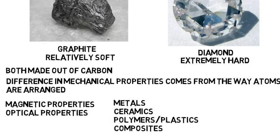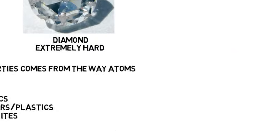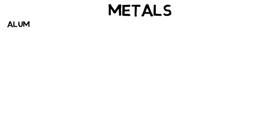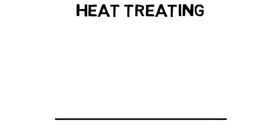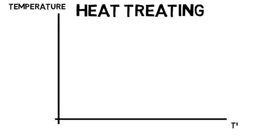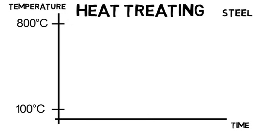You go over the four main classes of materials and apply everything you've learned to all of them, but a big focus is metal. The main metals you go into include aluminum, steel, stainless steel, titanium, copper, and so on. One important topic dealing with metals is heat treating. You're going to learn how to analyze a temperature versus time graph. The temperature may go up to something like 800 degrees Celsius and down to around 100 degrees Celsius — and let's say this is for something like steel, which would be solid at all of these temperatures, because again you don't really go into liquids or gases. The time may range from one second to something like 100,000 seconds, or about 28 hours.